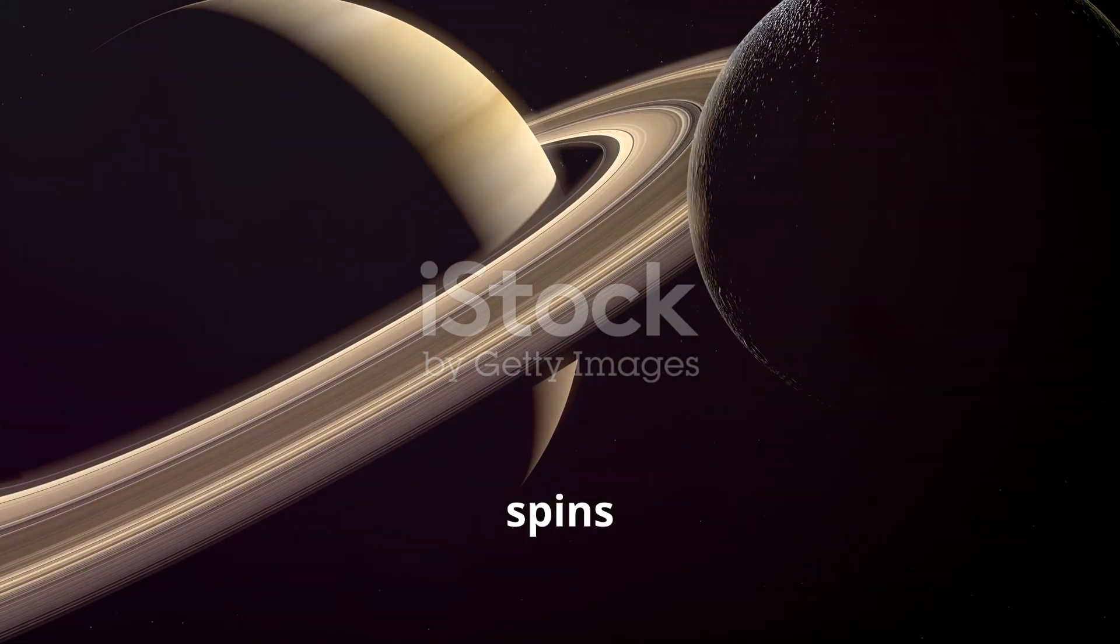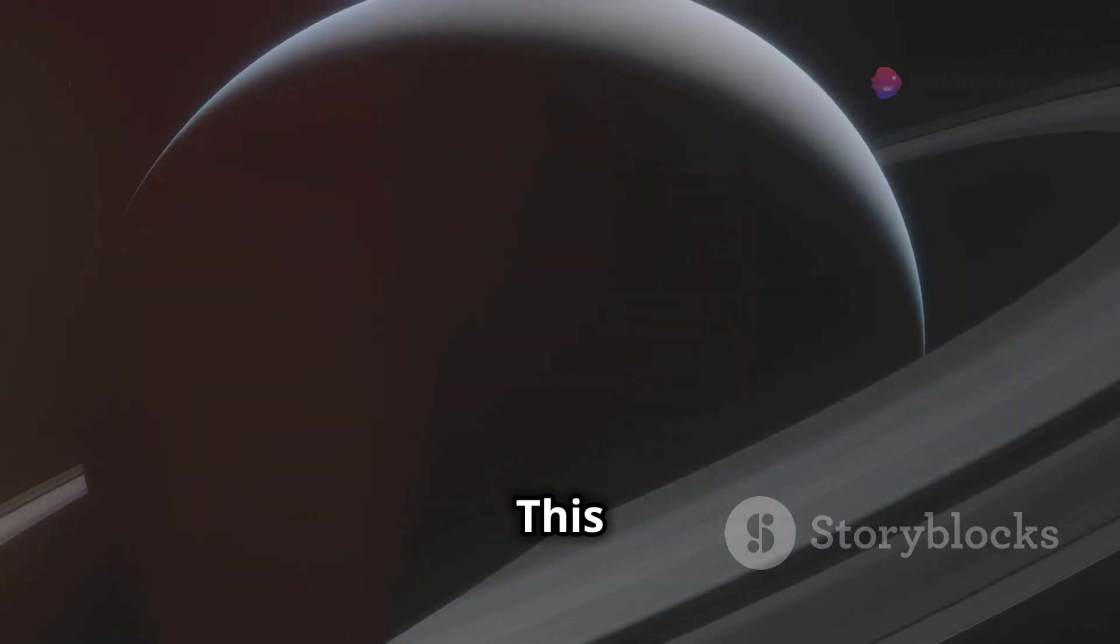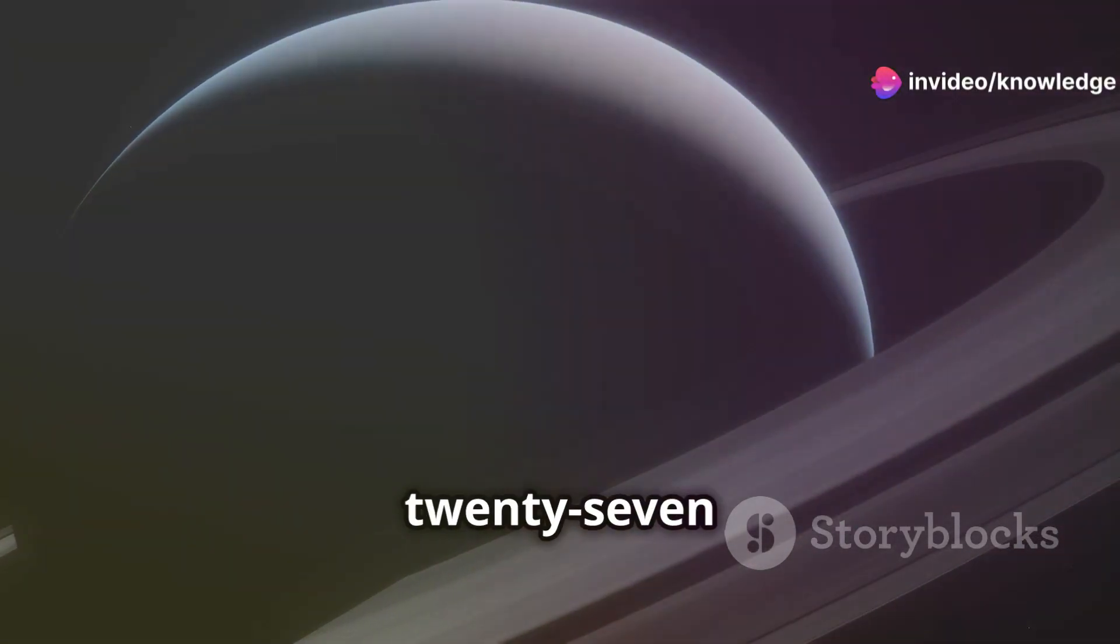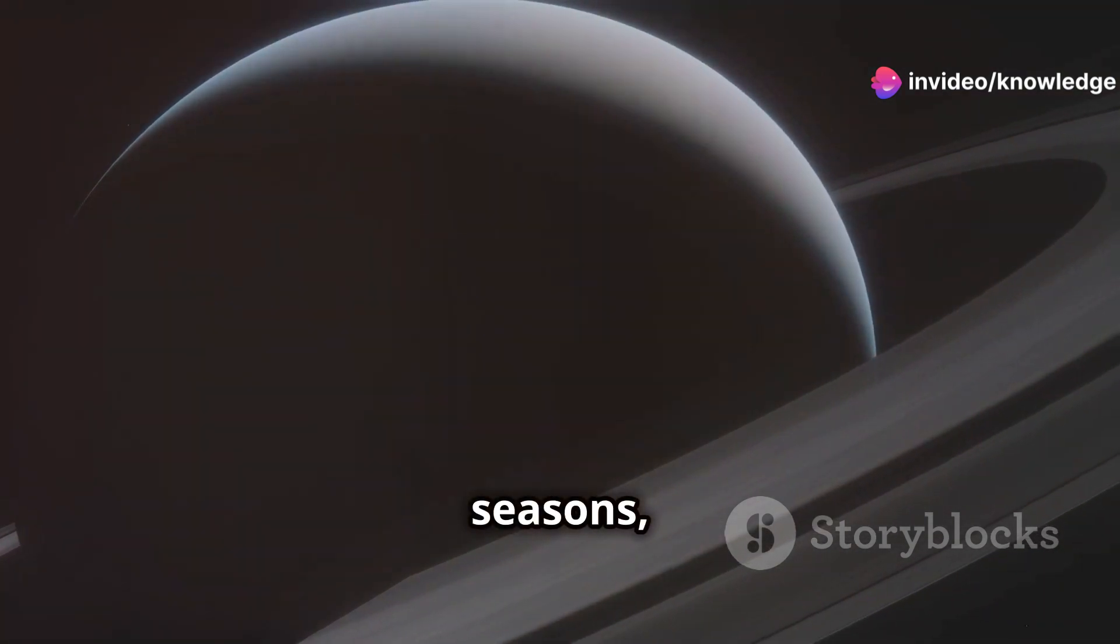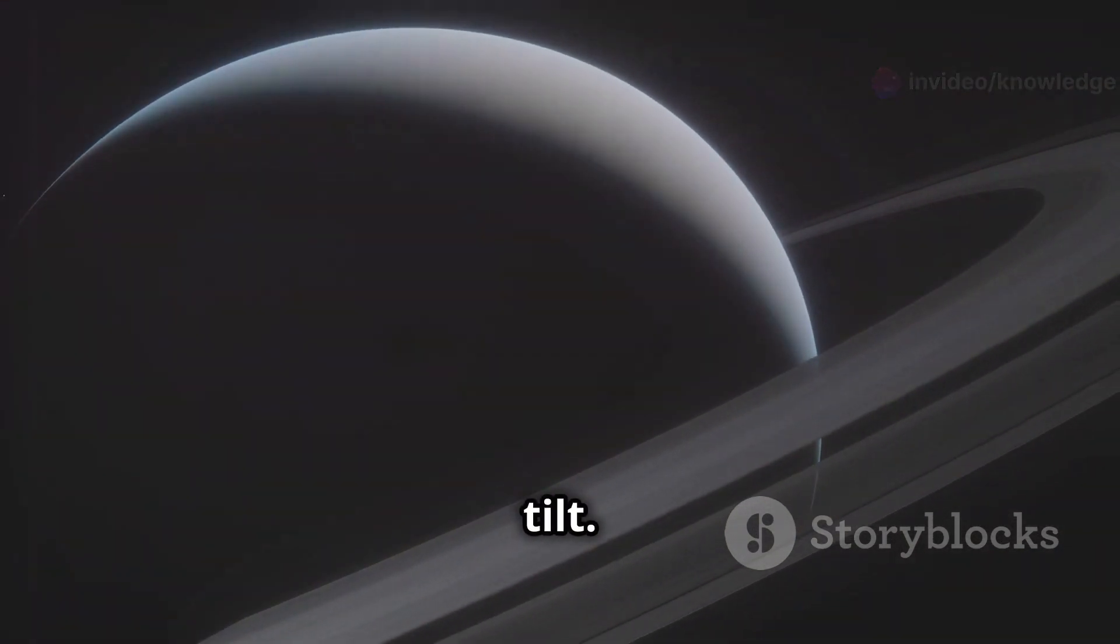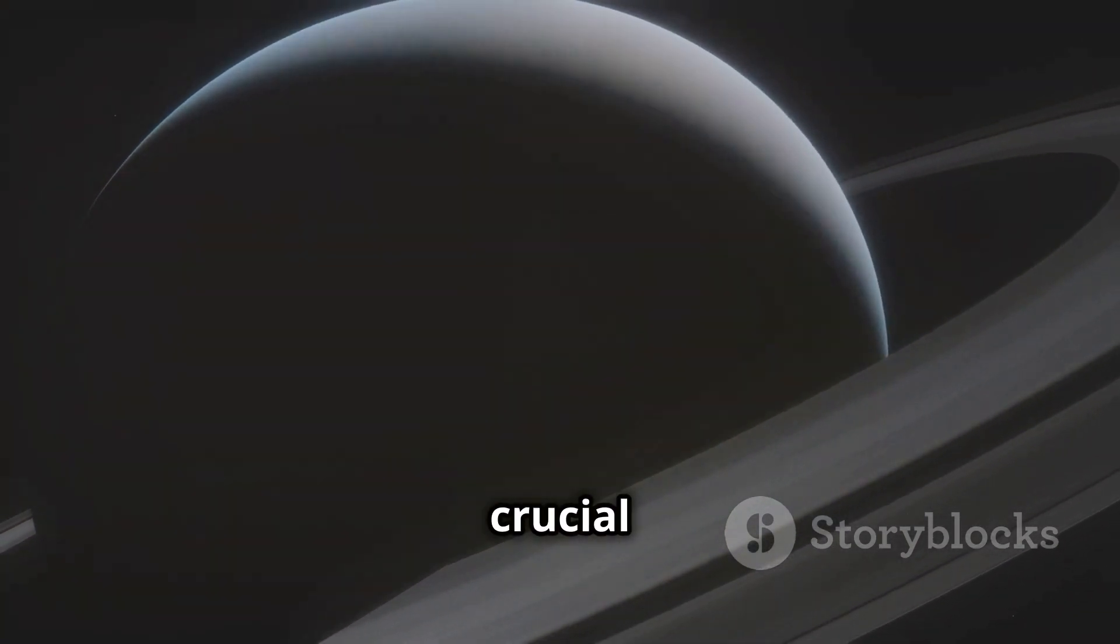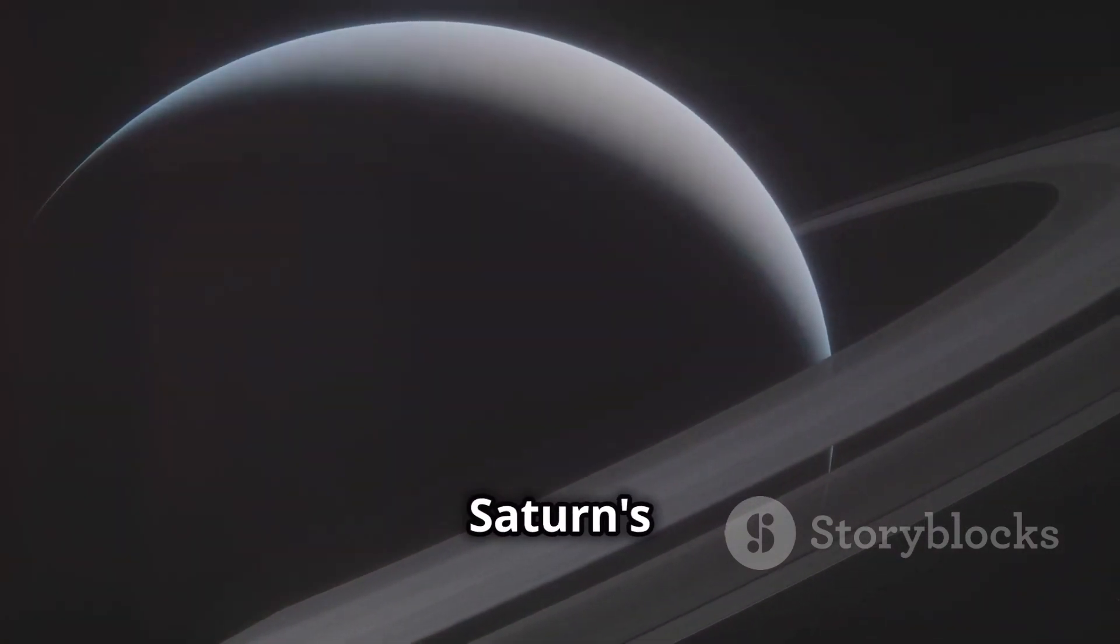Saturn, like Earth, spins on an axis. This axis is tilted at an angle of about 27 degrees. This tilt is what gives Saturn its seasons, just like Earth's tilt. But this tilt also plays a crucial role in the disappearing act of Saturn's rings.